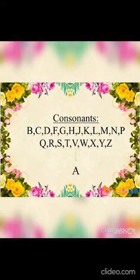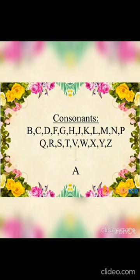Now if we take out A, E, I, O, U from our English alphabet, we are left with 21 letters. These 21 letters are known as consonants — B, C, D, F, G, H, J, K, L, M, N, P, Q, R, S, T, V, W, X, Y, Z. These are consonants, and they have a common friend — the article 'a'.